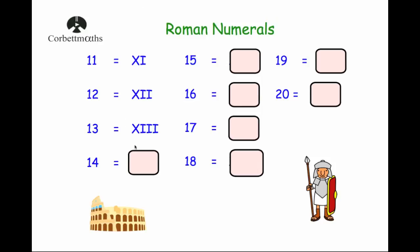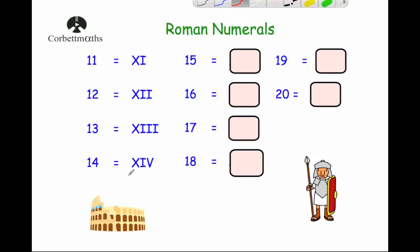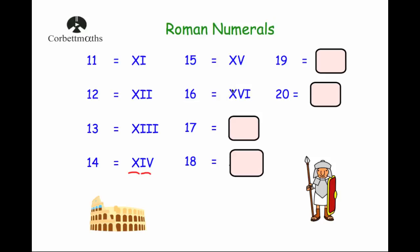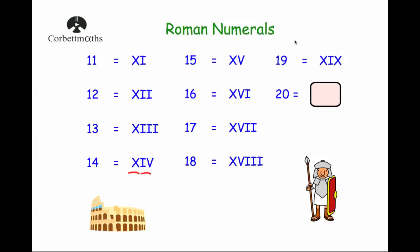Thirteen — the ten is X and three is III, so XIII. Fourteen — four is IV, and with the X in front, the X is ten and IV is four, so XIV. Fifteen is XV — ten and five. Sixteen is XVI — ten and six. Seventeen is XVII. Eighteen is XVIII — X and then VIII. Nineteen is XIX — X for the ten and IX for the nine. And twenty is XX. Those are the numbers from eleven to twenty.